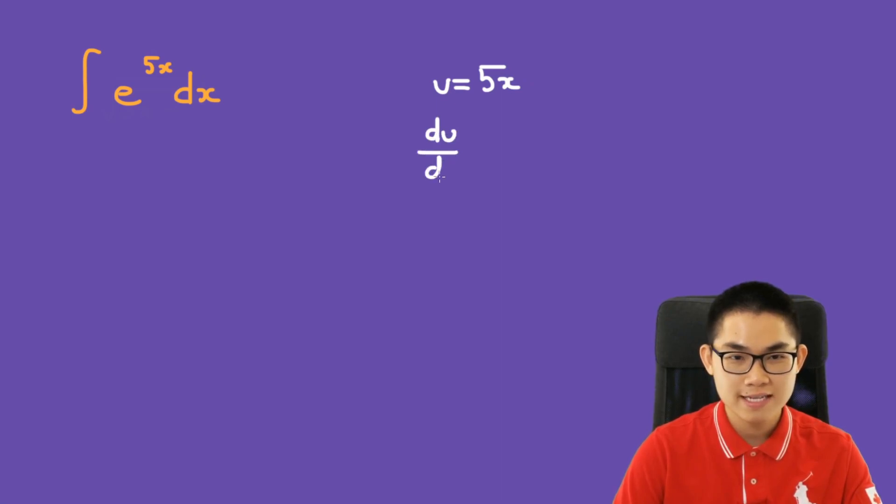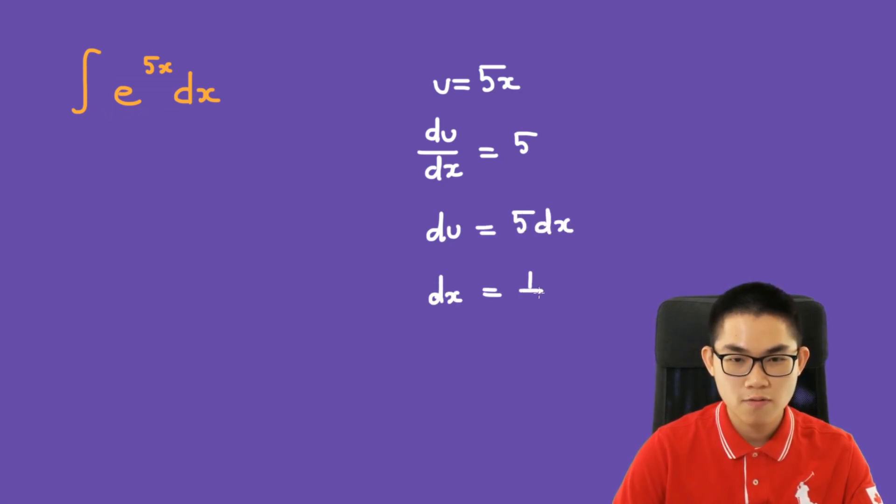So du over dx is equal to 5. Then du is 5 times dx. And dx is 1 over 5 times du.